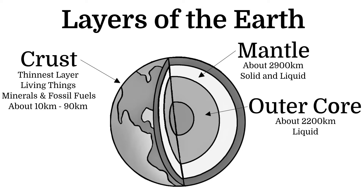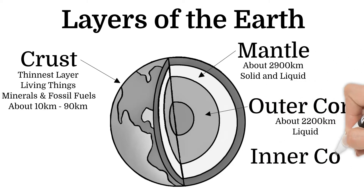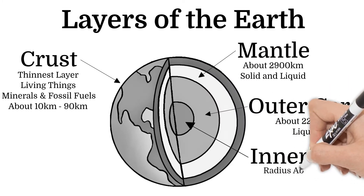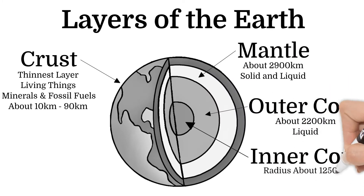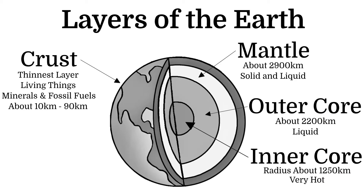Lastly, the very center we call the inner core. The radius of the inner core is estimated to be 1,250 kilometers. The inner core is super hot yet it is a solid ball, not liquid. This is because the weight of all the other layers have pressed it into a hard ball.